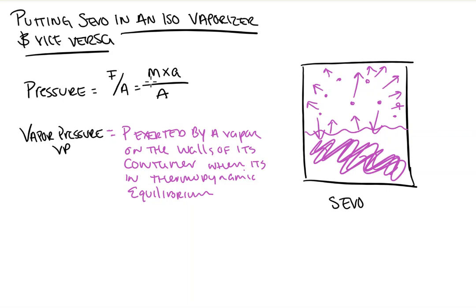When the same number of molecules leaving the liquid phase equals those re-entering from vapor, that's thermodynamic equilibrium. The pressure is the pressure exerted by these vapor molecules as they slam into the walls of their container. Looking back at our equation — pressure equals mass times acceleration — pressure goes up if either the mass of molecules goes up (greater number or heavier molecules), or if the molecules' acceleration increases (they're moving faster), or if the area is made smaller.